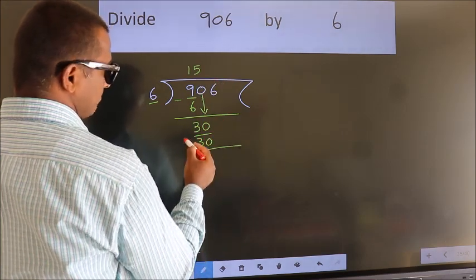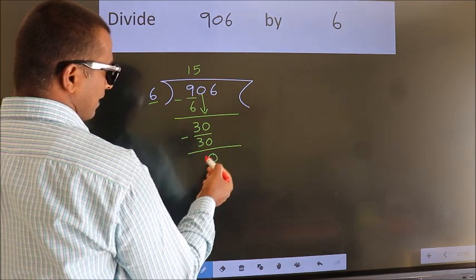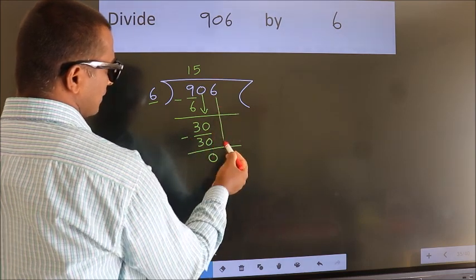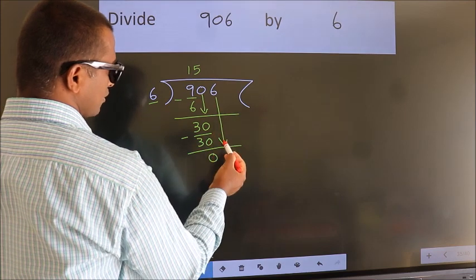Now we subtract. We get 0. After this, bring down the beside number. So, 6 down.